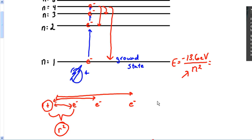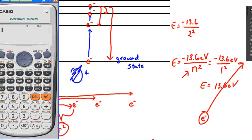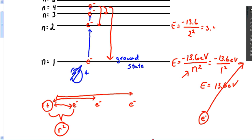In the first energy level of hydrogen, it'd be negative 13.6 over 1 squared. So the energy is negative 13.6 electron volts — meaning it would take 13.6 electron volts of energy to completely remove that electron. In the second energy level, negative 13.6 over 2 squared — 13.6 divided by 4 gives us negative 3.4 electron volts. Look at how much this energy diminishes.